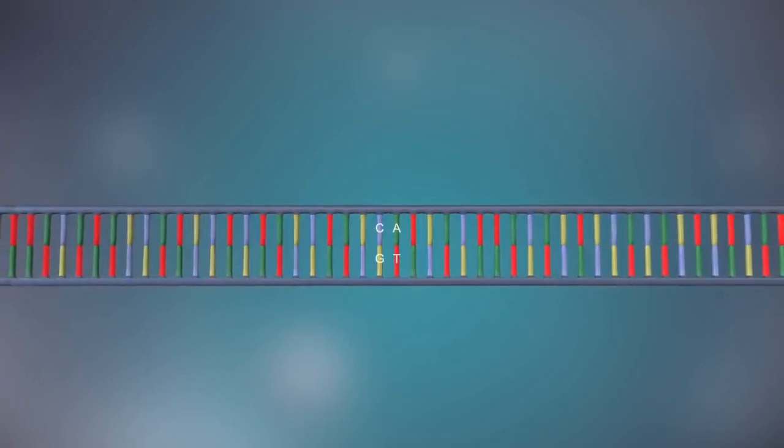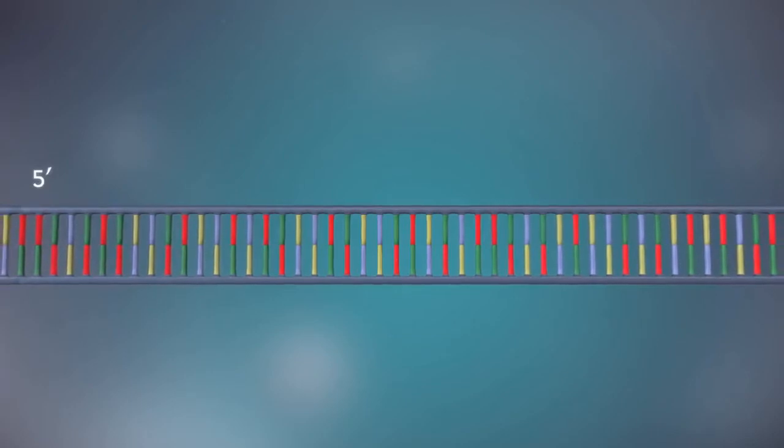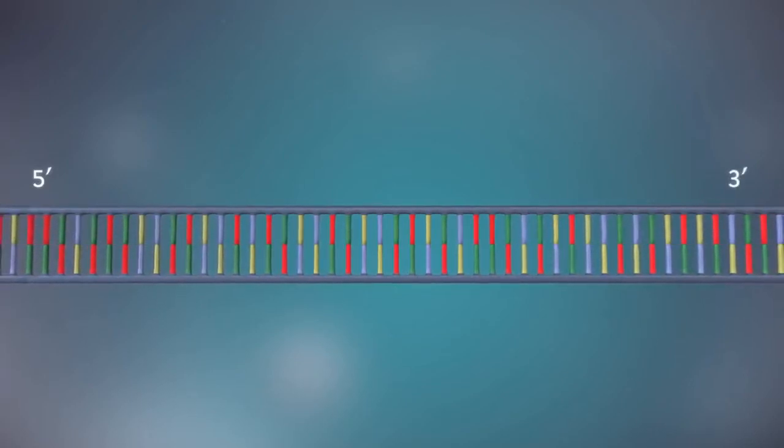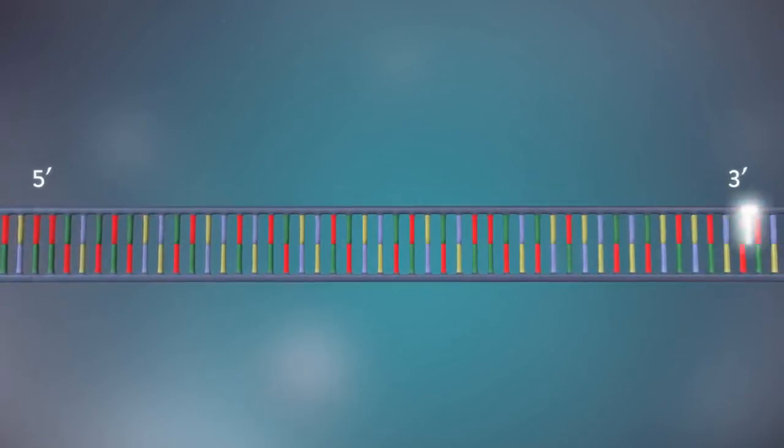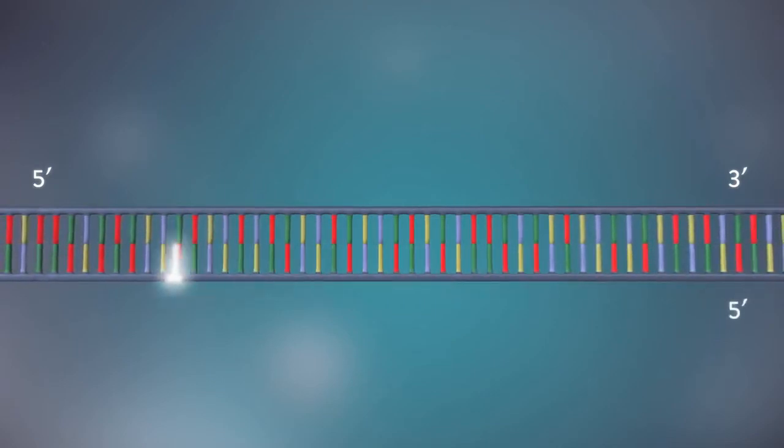Each strand has a 5-prime end and a 3-prime end. The two strands run in opposite directions. This determines how each strand of DNA is replicated.